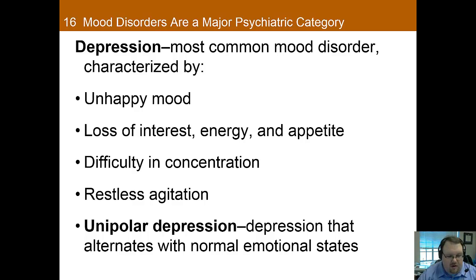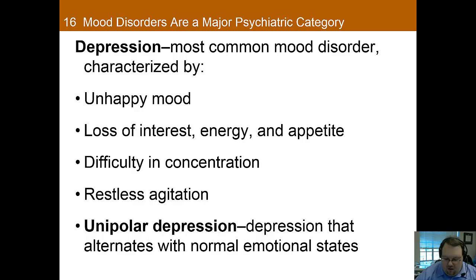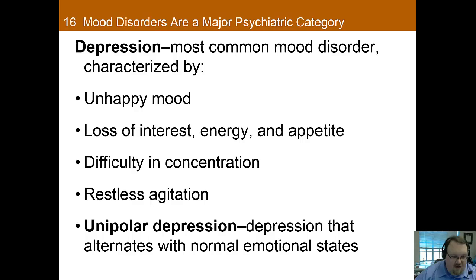Unipolar depression is the most common mood disorder we see. It's depression that alternates from normal emotional states, so you're either okay or you're depressed. This differs from bipolar, where you can also be manic or in a manic state. Unipolar is the typical depression that you think of when you think of depression.